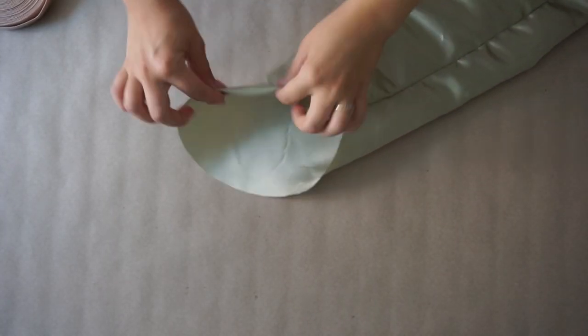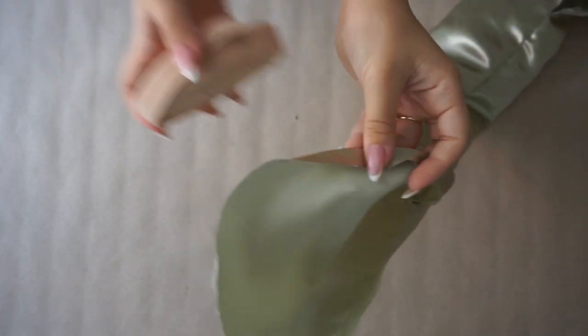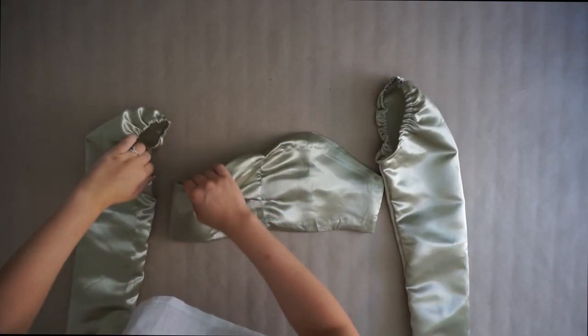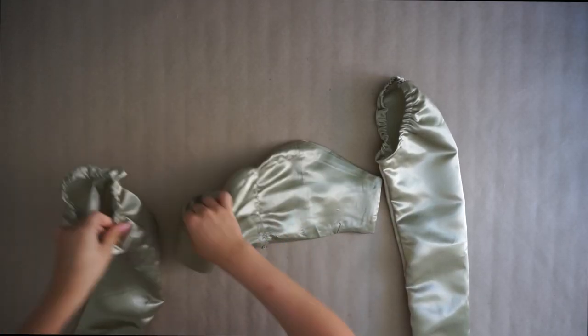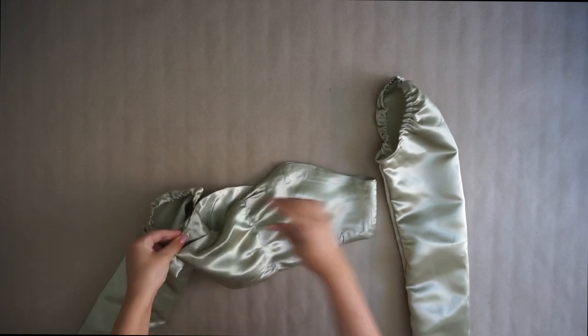For the sleeve top you're gonna create a loop where you're going to place the elastic band in. And then once you have done that, you're just going to connect it with the top.